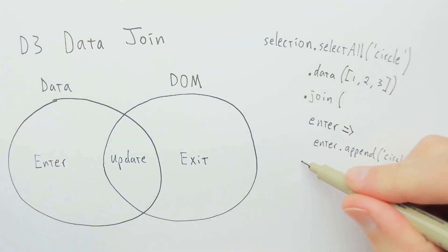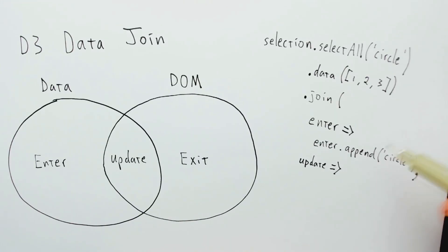So that's the enter case. And then there's the update case. And if we were to use the shorthand of passing circle here, this would just be a no-op. It would do nothing and return the update selection. And then the exit case, this is the selection of all the leftover DOM elements that no longer have any corresponding data elements. So usually, the thing to do is to just remove them from the DOM. And that looks like this. So that's the expanded syntax for .join.